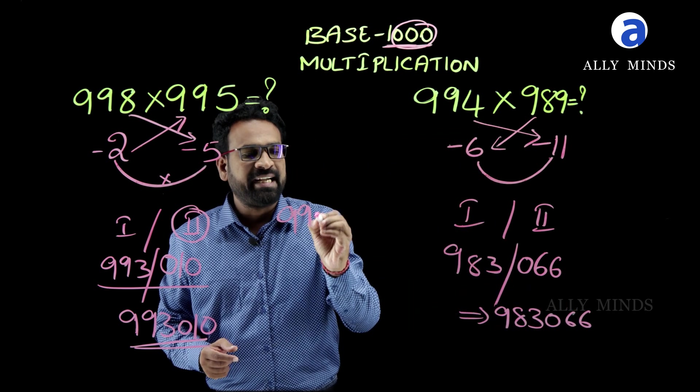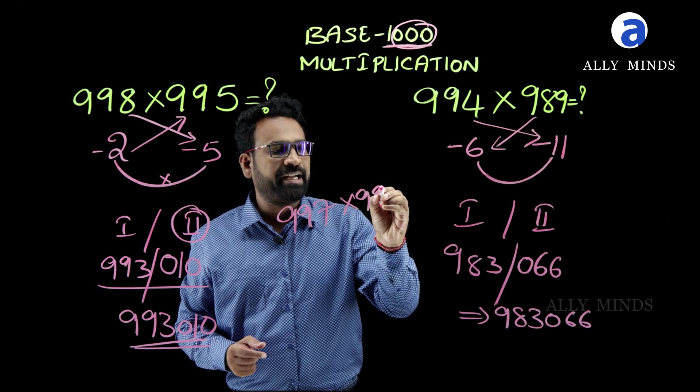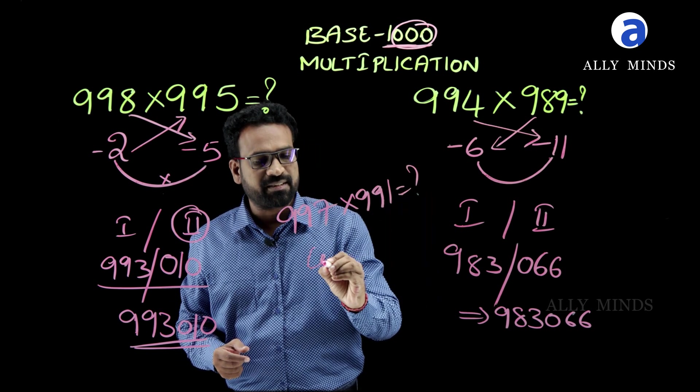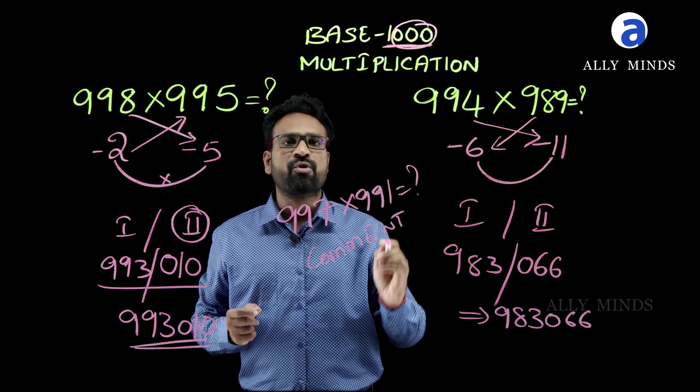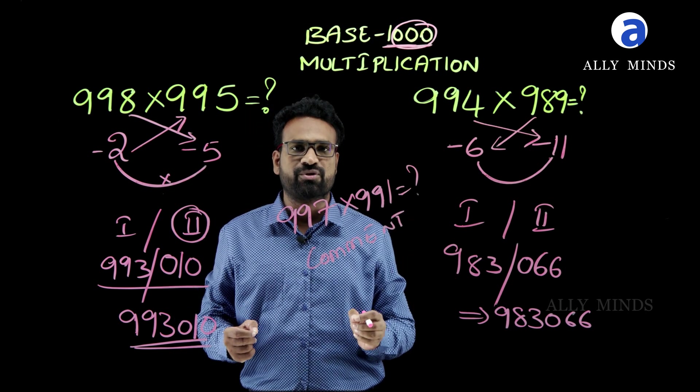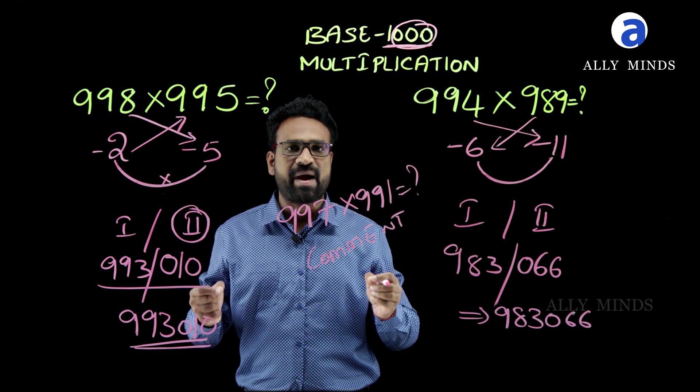Now, 997 into 991. Comment this answer. To learn more techniques, download the app AliMinds from the Play Store or visit the website AliMinds.com.